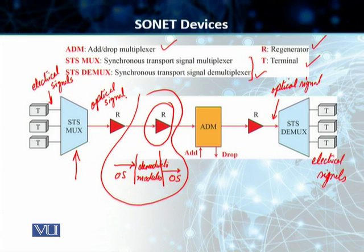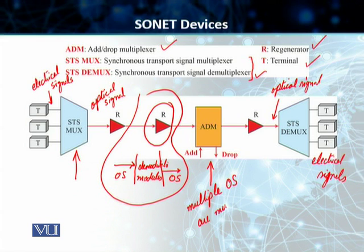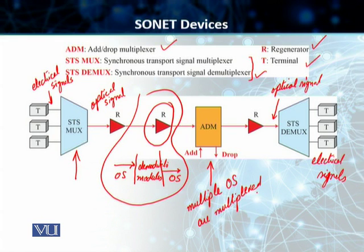Then you've got the add-drop multiplexer, which allows the insertion and extraction of multiple signals. Multiple optical signals are combined together, or multiplexed here. It takes optical signals from multiple STS multiplexers and then multiplexes them together so that they can be transported over the high-bandwidth optical fiber cable. A single combined optical signal is created from multiple source signals, and it is regenerated before it reaches its destination.